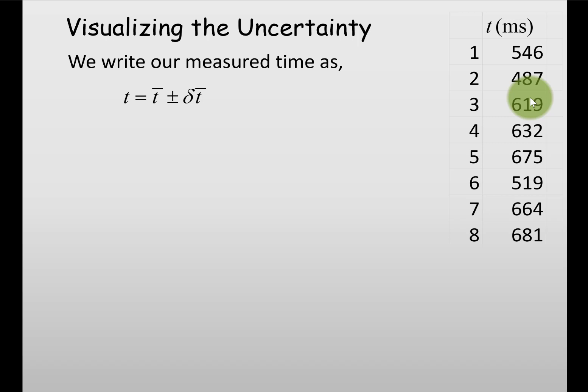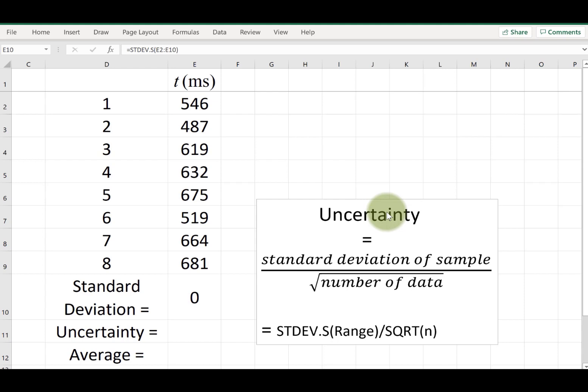Let's take a look at how we can use Excel to calculate uncertainty. The formula for the uncertainty is the standard deviation of the sample divided by the square root of the number of data points. The Excel function looks something like this.